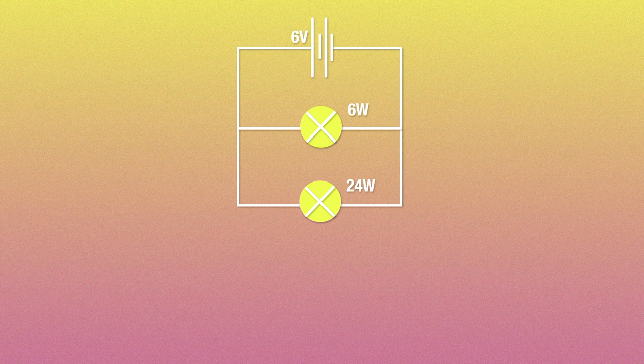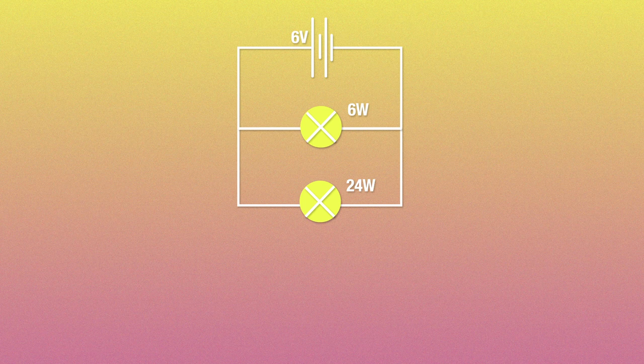Alright, we know the current for each bulb now. But how do you calculate the total power from the battery? Well, we're gonna use Kirchhoff's first law to find the total current from the battery. And for that, we'll have to look at this problem in terms of the junctions.